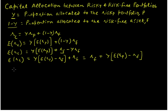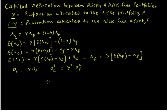Let us also write the risk of the complete portfolio, given by the standard deviation, sigma C. All the risk arises from the risky asset, since the risk-free asset by definition has no risk. So sigma C equals Y times sigma P. Squaring everything, the variance is Y-squared times the variance of P. From this, we can define Y as sigma C over sigma P.